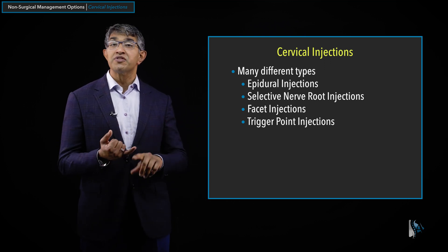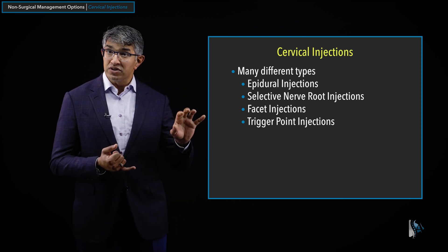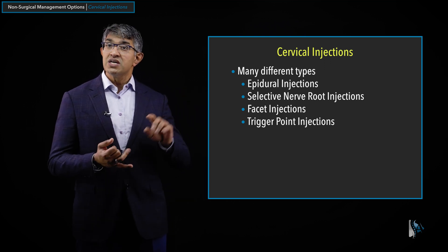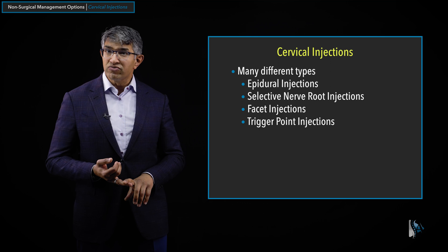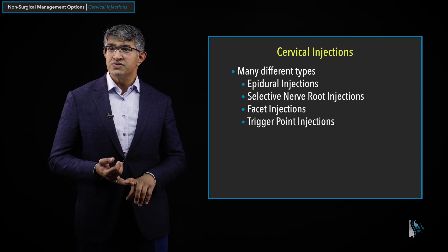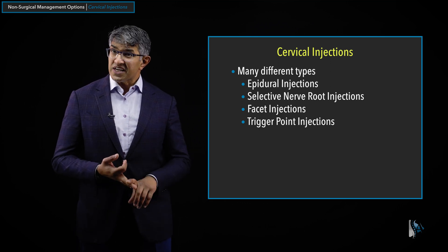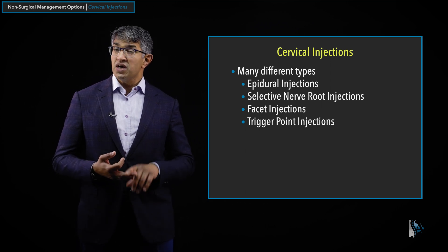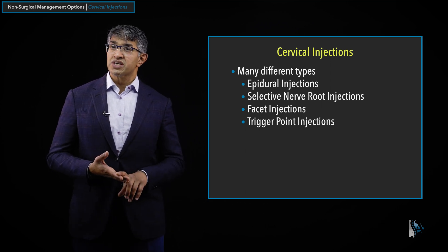They come in a few different types. The common ones are things like epidural injections, selective nerve root injections, facet injections, and trigger point injections. These are all different, and what makes them different is how it is done and what the target is.